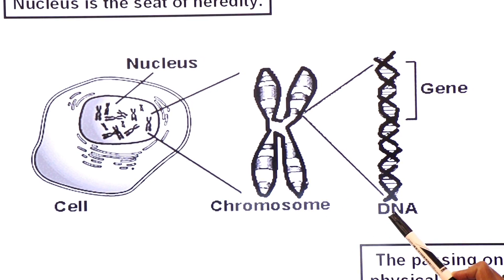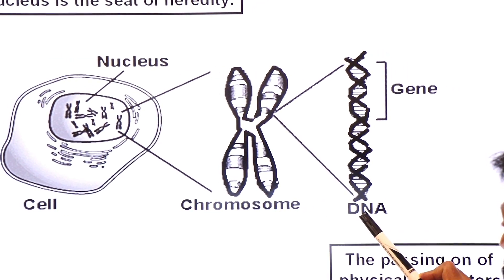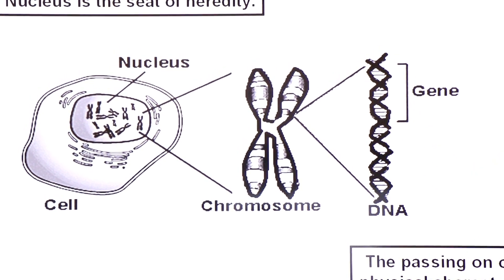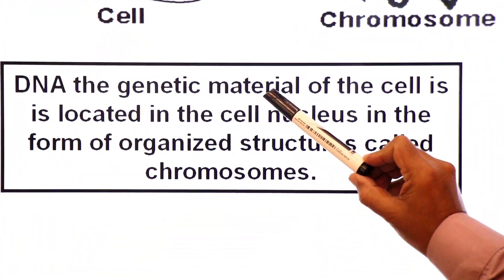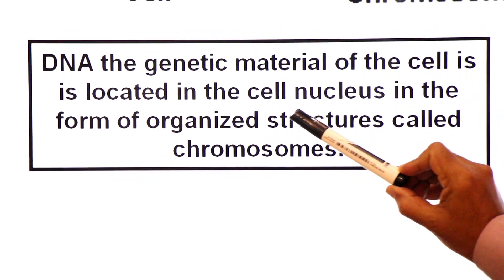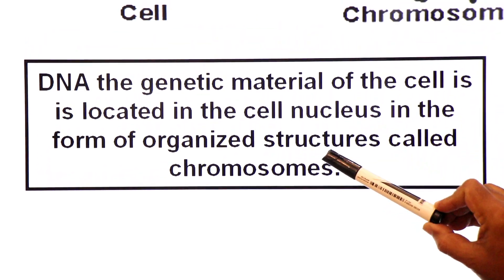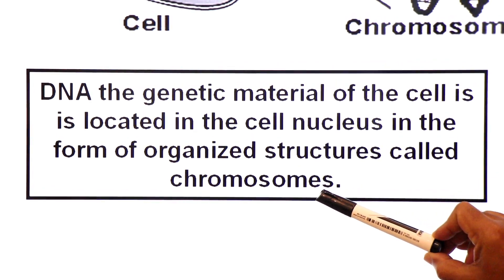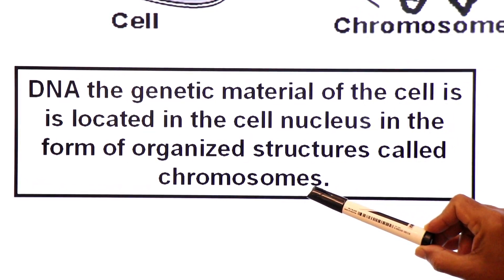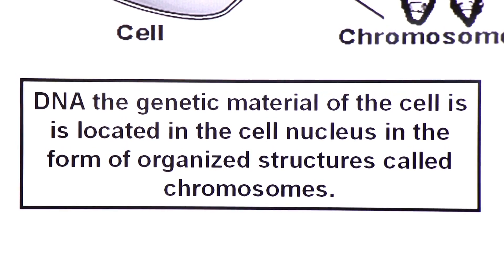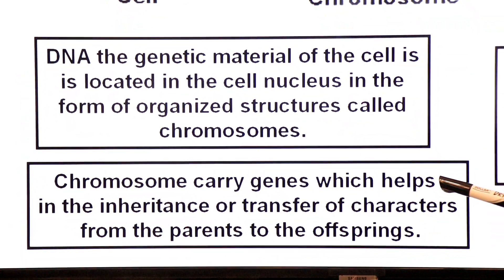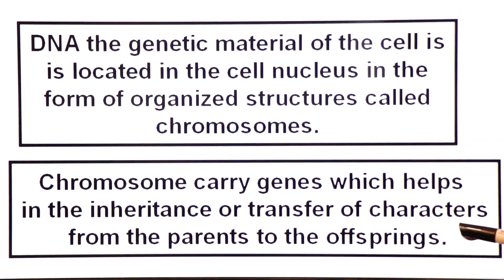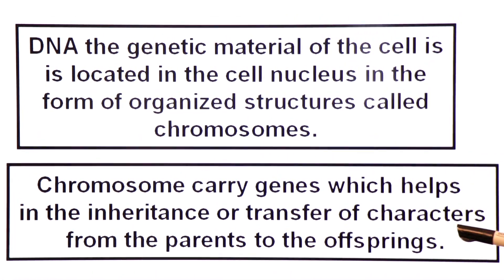Chromosomes are the organized form of DNA and histone proteins. The genetic material of the cell — DNA — is located in the cell nucleus in the form of organized structures called chromosomes. The chromosomes carry genes which help in the inheritance or transfer of characters from parents to offspring.